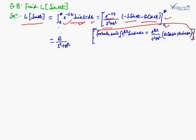The formula used here is: integral of e^(ax) sin(bx) dx = e^(ax) / (a² + b²) × (a sin(bx) − b cos(bx)). Using this result, when we substitute the integration limits, the value becomes a / (s² + a²). So, Laplace transform of sin(at) = a / (s² + a²).